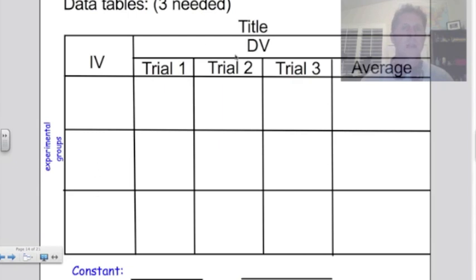On the top then, we have DV, which stands for dependent variable. We want to run three different trials, and then come up with an average.